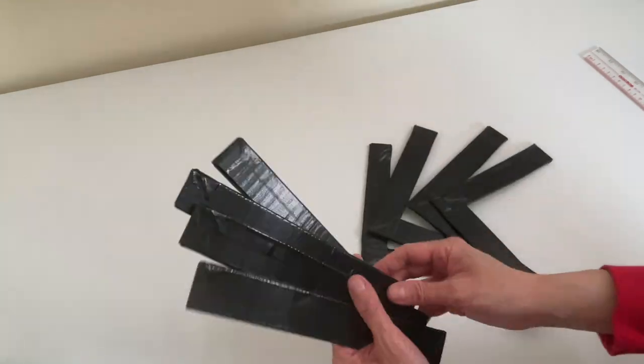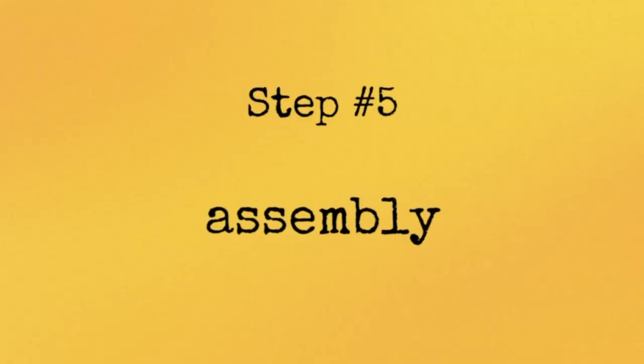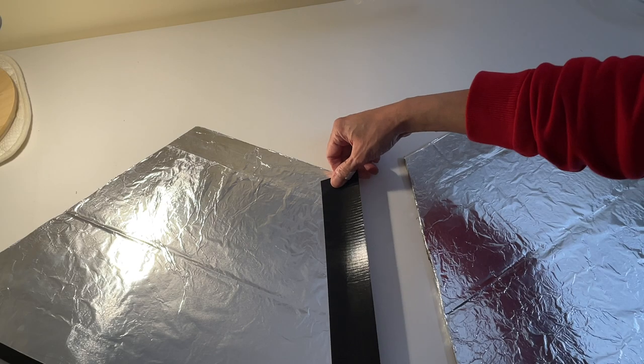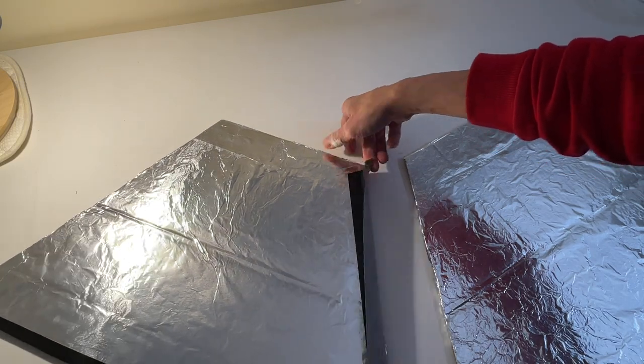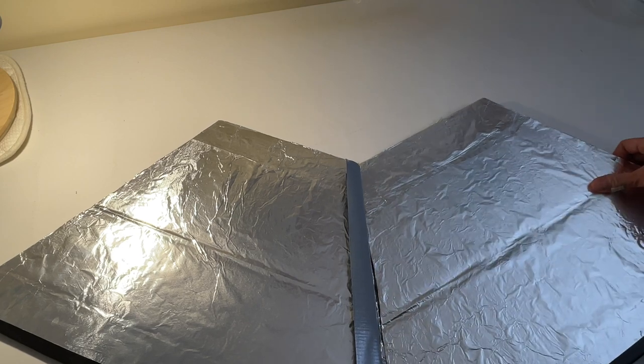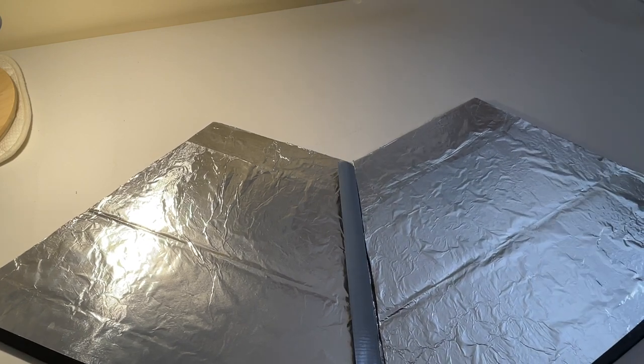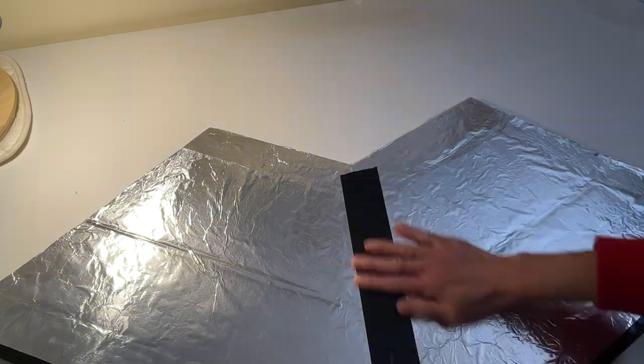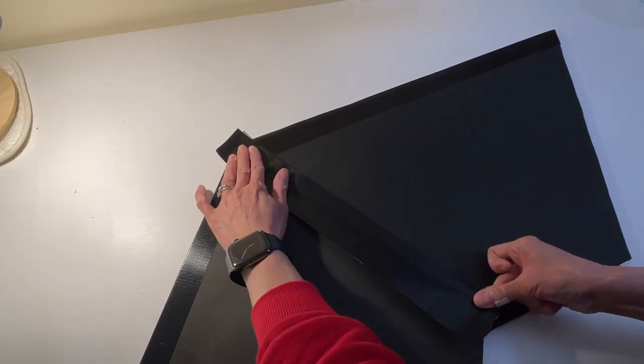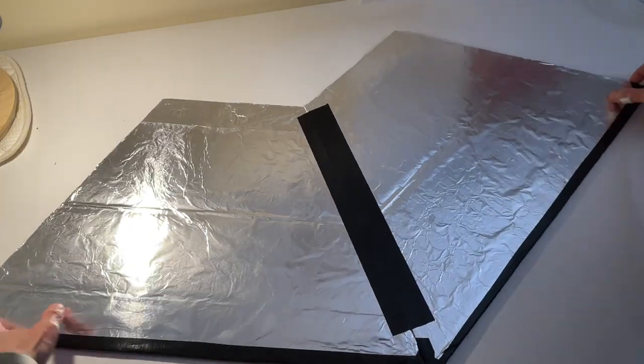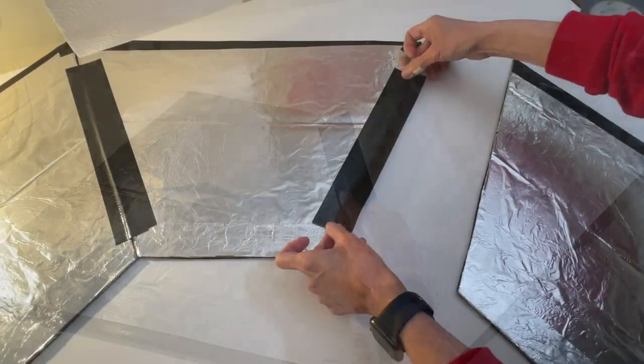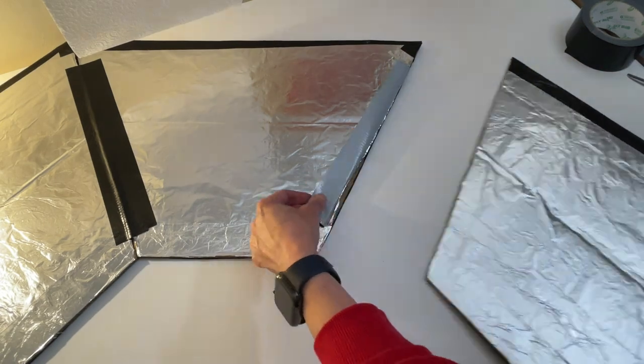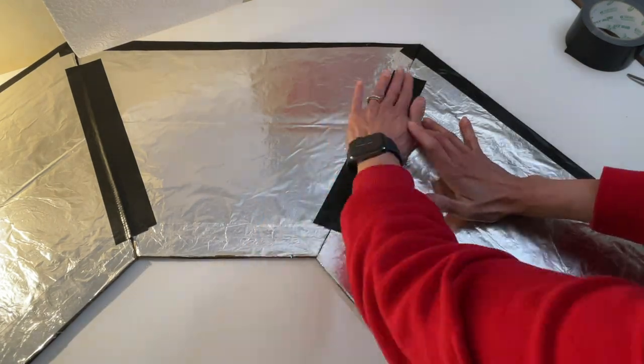Let's move on to step number five: assembly. First, get two panels on a flat surface, then attach them together using duct tape. Make sure they are perfectly lined up, just like this. To secure them, tape the other side as well. Continue to attach the other two panels.